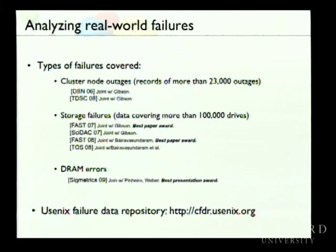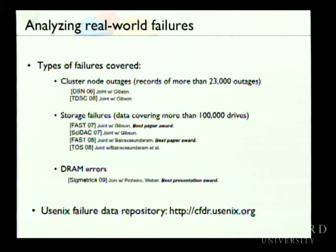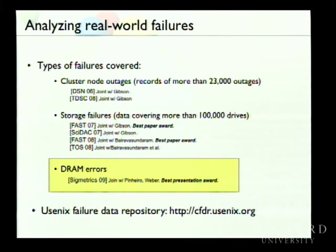So the goal of my work over the past two years was to get my hands on as much failure data from real large-scale production systems as possible. The first dataset I got was from Los Alamos National Labs — almost ten years of data, cluster node outages across more than 20 large-scale high-performance computing clusters, made publicly available through a failure data repository with USENIX. I've also analyzed data on storage failures — both hard disk drive failures and other failure modes like latent sector errors. The most recent work, which is what this talk is about, is memory errors in DRAM.